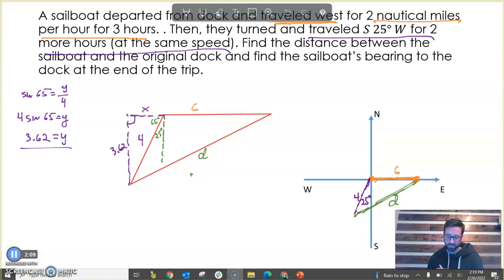Now we can say the cosine of 65 equals X over 4. So I just said the cosine of this angle equals adjacent over hypotenuse. And we'll solve for that. So if I multiply by 4 on both sides, 4 times the cosine of 65 equals X. And our X there is equal to about, and I'm rounding, 1.69. So this right here is 1.69.